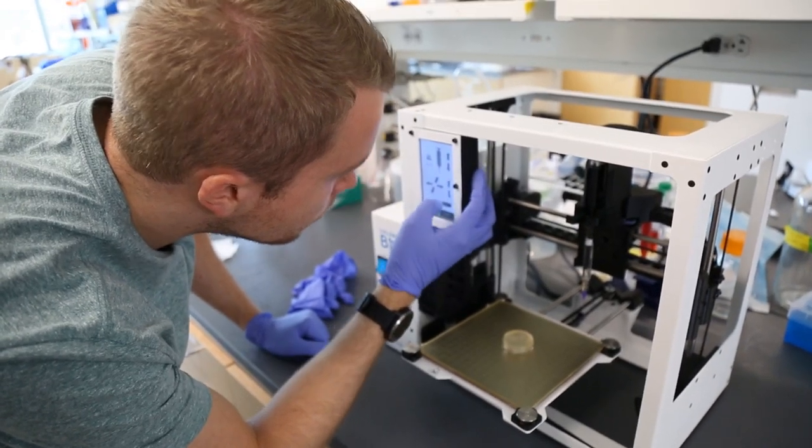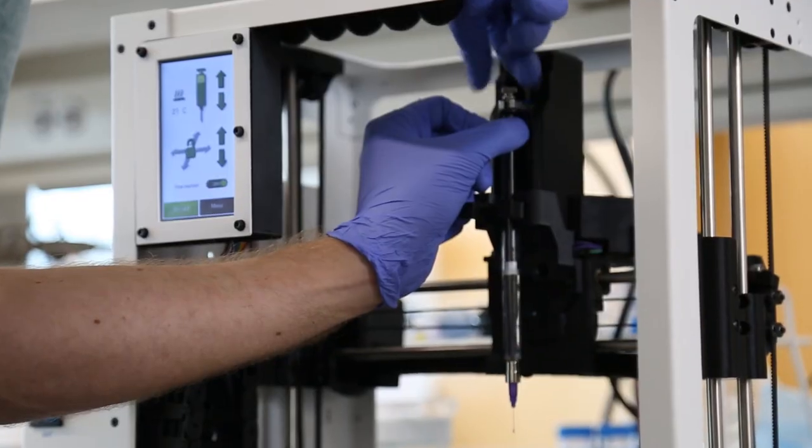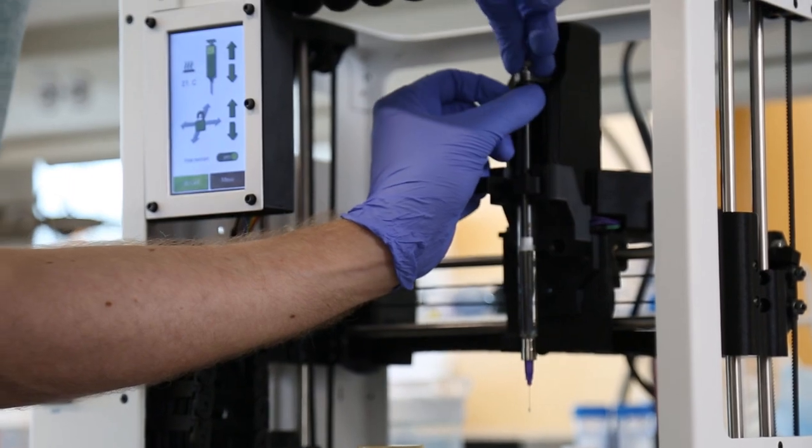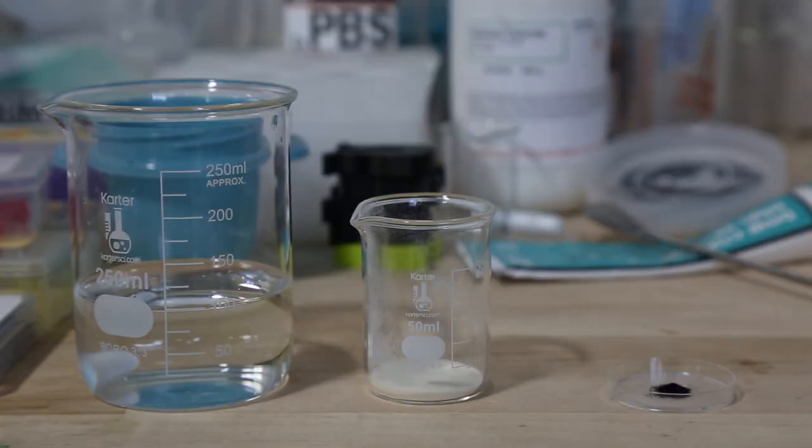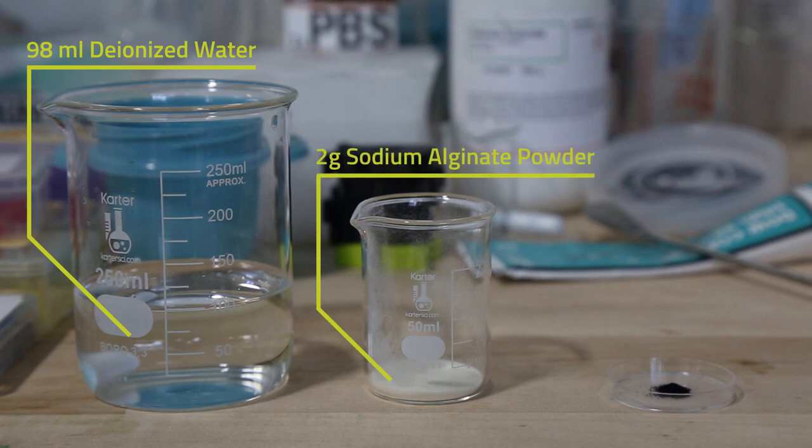Today we're gonna mix 100 milliliters of sodium alginate to print out of the LulzBot bio and then we're gonna load that into the syringe pump. We need 98 milliliters of deionized water, 2 grams of sodium alginate powder, and 0.02 grams of Alcyon blue dye.